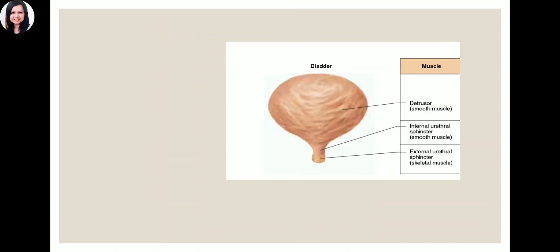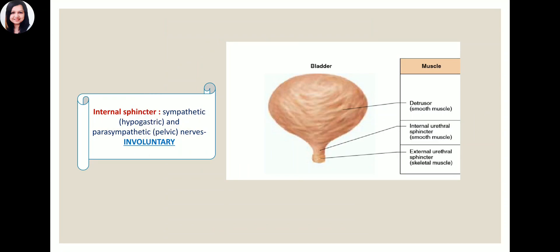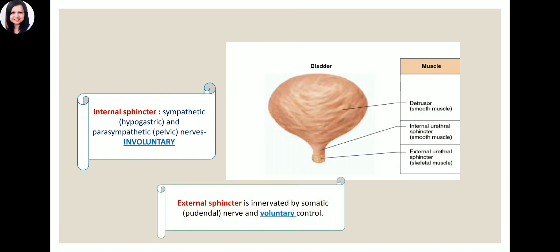In females there is no internal sphincter. The detrusor is a smooth muscle — involuntary. The internal urethral sphincter is also a smooth muscle, innervated by sympathetic hypogastric and parasympathetic pelvic nerves. The external urethral sphincter is a band of skeletal muscle, so it is under voluntary control. When we try to hold urine because the place is not suitable for micturition, we are activating our pudendal nerve.